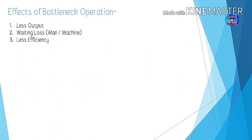The effects of bottleneck operations: first, less output — if one machine has too much cycle time, the next machine will wait and output is reduced. Second, waiting loss — either man or machine will wait. Third, less efficiency — since efficiency is output divided by input, having machines wait reduces overall efficiency.